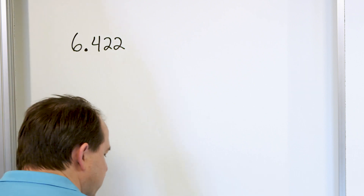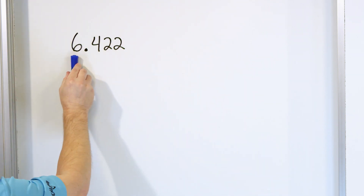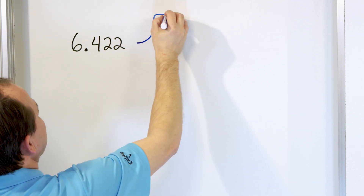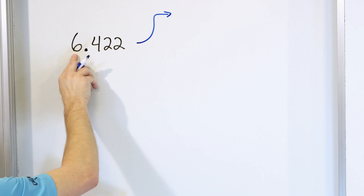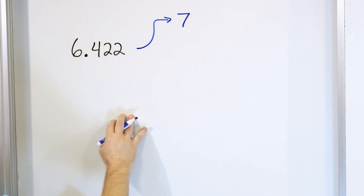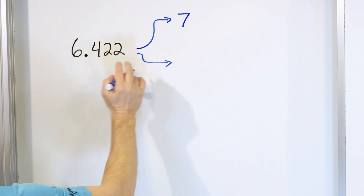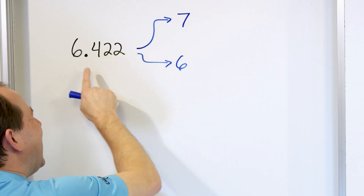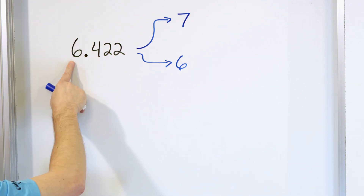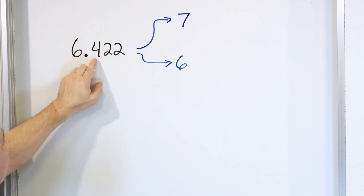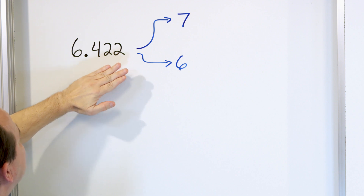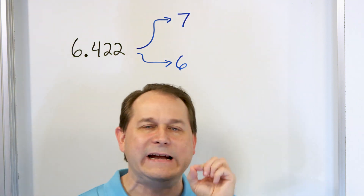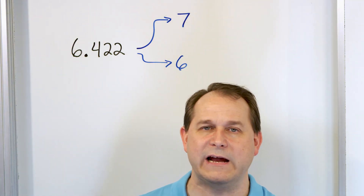When we're rounding 6.422 to the nearest whole number, we're going to round this digit — our choices are to round up to seven loaves of bread, or round down and stay at six loaves of bread. Rounding up means going to the next whole number; rounding down means staying where you are. If it's exactly 6.5, that's exactly halfway to the next whole number.